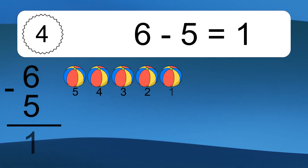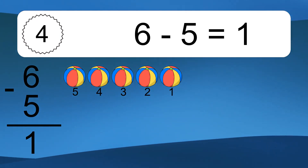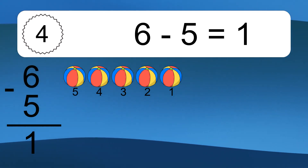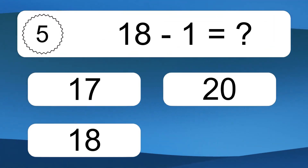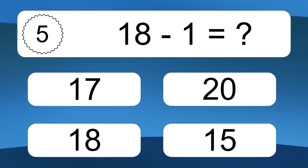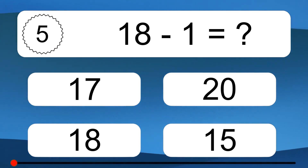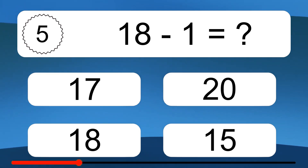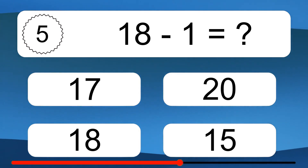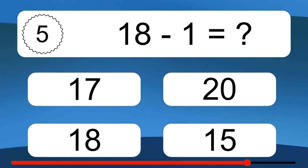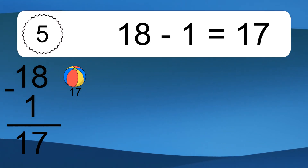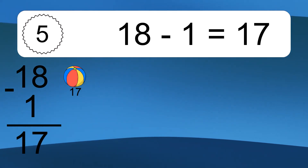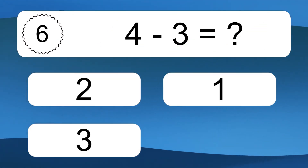6 minus 5 equals 1. Let's count it: 5, 4, 3, 2, 1. 18 minus 1 equals what? 18 minus 1 equals 17. Let's count it: 17. 4 minus 3 equals what?